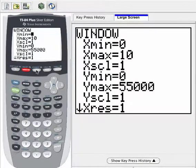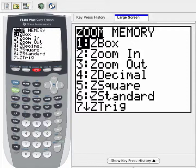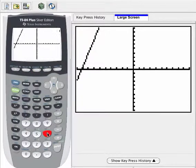So I'm going to go to Zoom, and then number six, which is Standard, and that's going to automatically graph on the window negative 10 to 10 for X and negative 10 to 10 for Y.